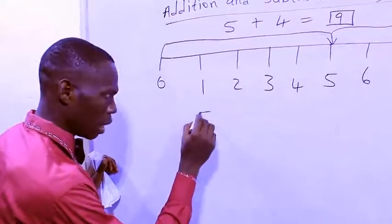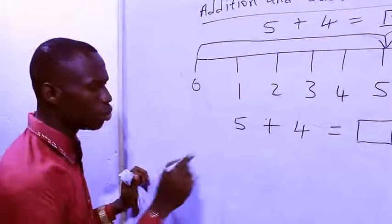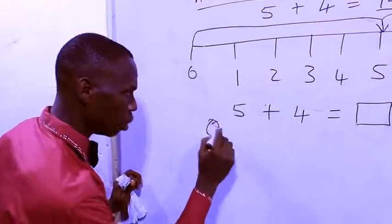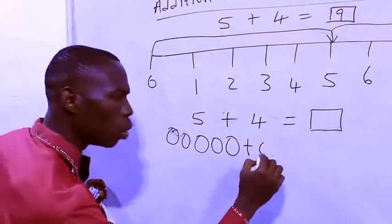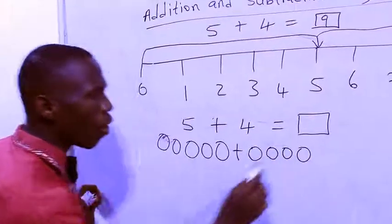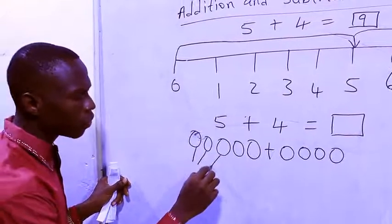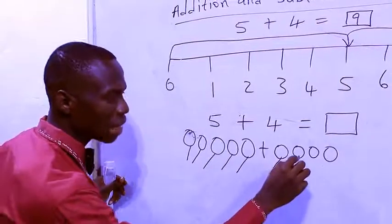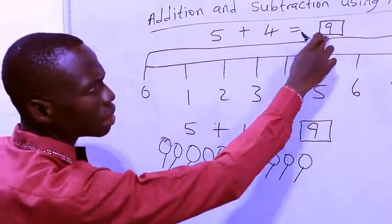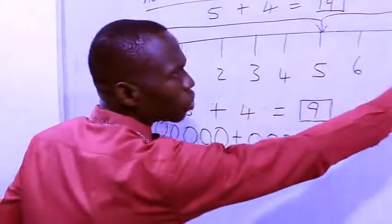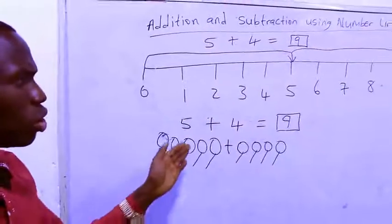Let's check whether we are correct. Five plus four equals nine — let's count using stones. One, two, three, four, five. Plus four: one, two, three, four. This plus sign means join them together. Let's join them and count the answer: one, two, three, four, five, six, seven, eight, nine. Nine! Where did our arrow stop? Nine. This is called addition using number line.